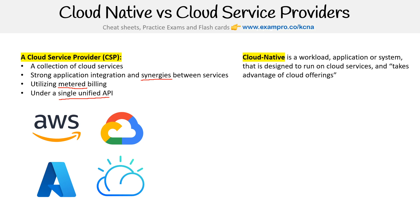On the other side, we have cloud native. This is a workload, application, or system that is designed to run on cloud services and take advantage of cloud offerings. When we say cloud services, we're really just talking about compute — a place to run your virtual machines, your containers, your Kubernetes cluster. Cloud native can integrate with some cloud service provider applications or services, like for databases or their load balancer, but they're not necessarily taking advantage of the cloud service provider — they're taking advantage of cloud offerings like cloud computing.